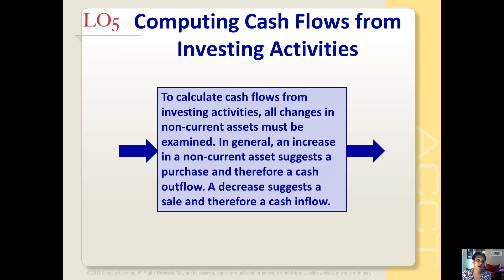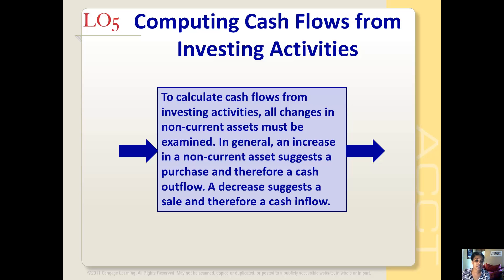Now let's talk about how we calculate cash flows from investing activities. To calculate cash flows from investing activities, all the changes in the non-current assets must be examined. In general, an increase in a non-current asset suggests that there was a purchase and therefore we had a cash outflow, while a decrease would suggest that there was a sale and so we had a cash inflow.